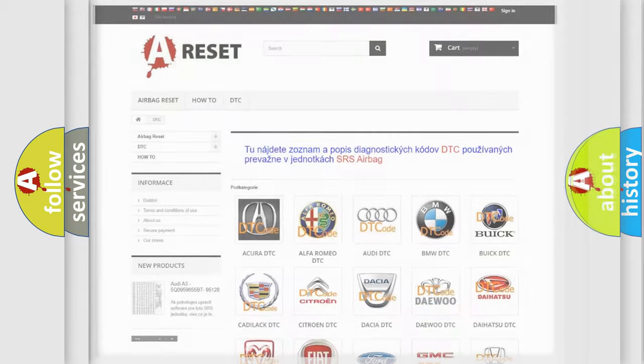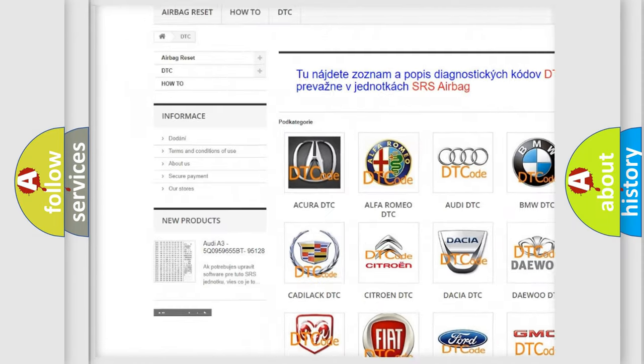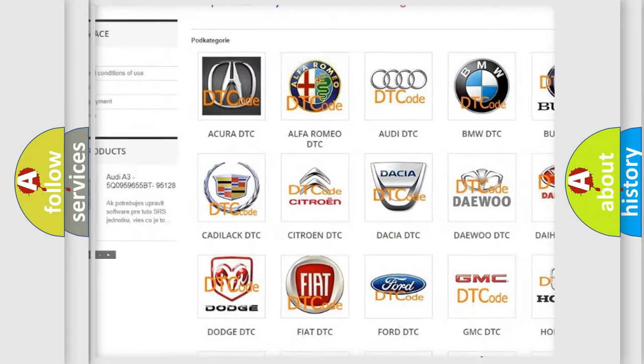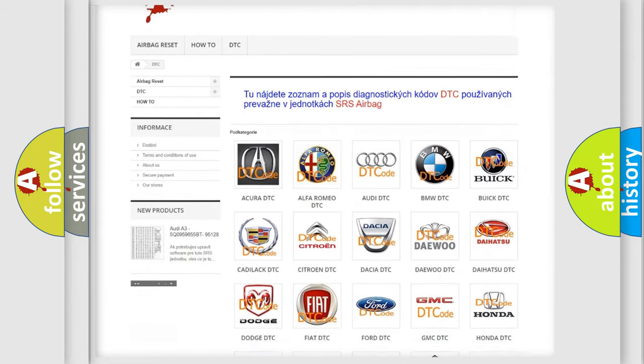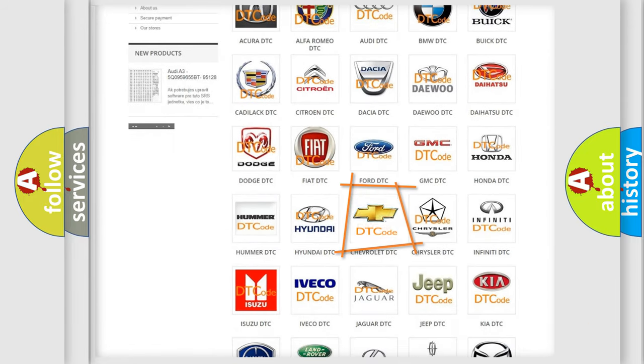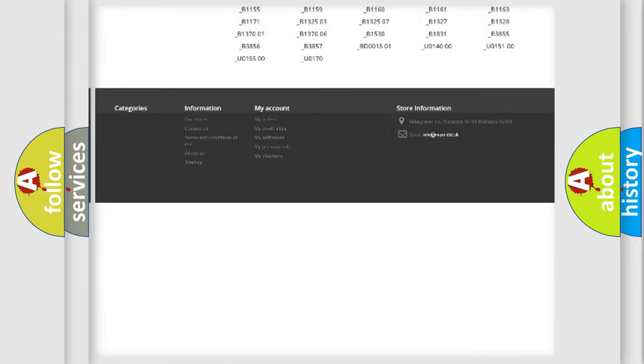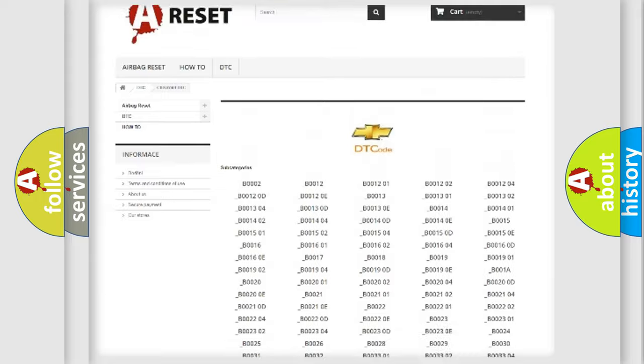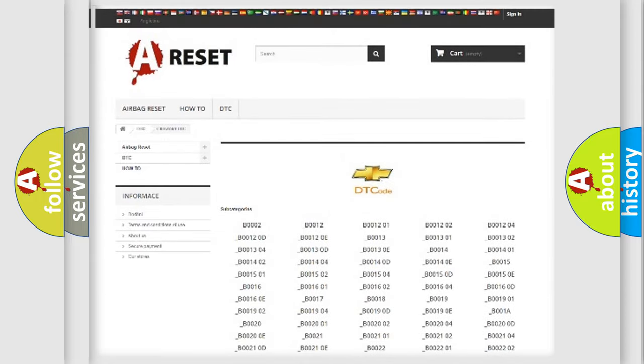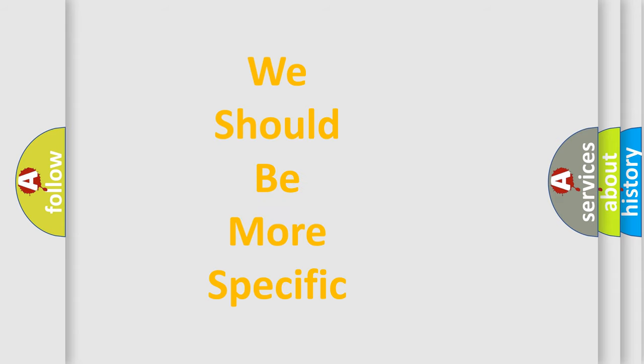Our website airbagreset.sk produces useful videos for you. You do not have to go through the OBD2 protocol anymore to know how to troubleshoot any car breakdown. You will find all the diagnostic codes that can be diagnosed in Chevrolet vehicles, and also many other useful things. The following demonstration will help you look into the world of software for car control units.